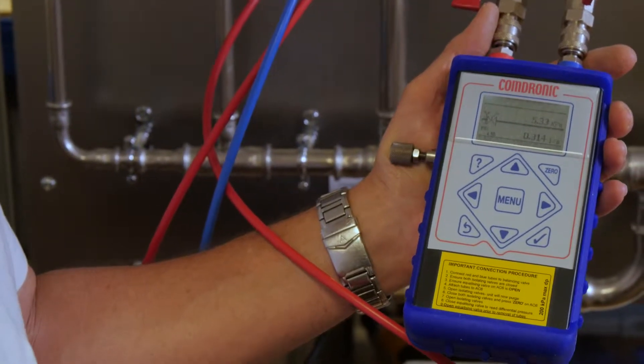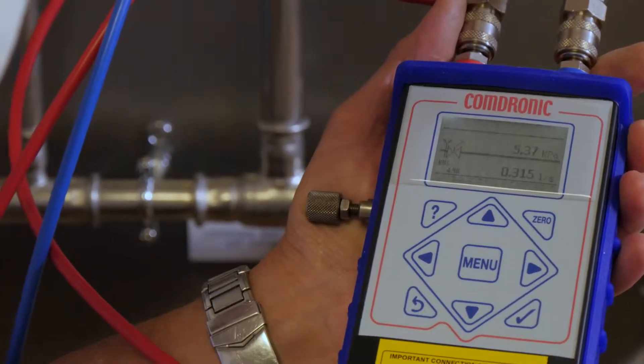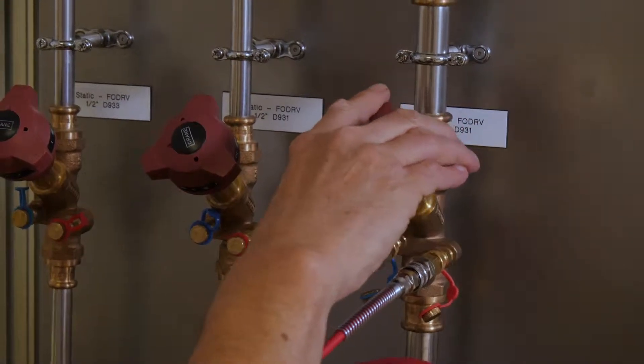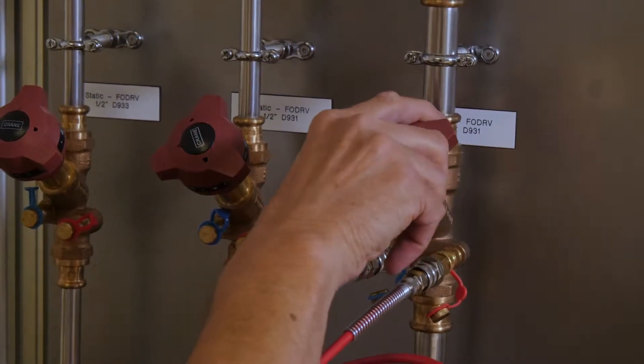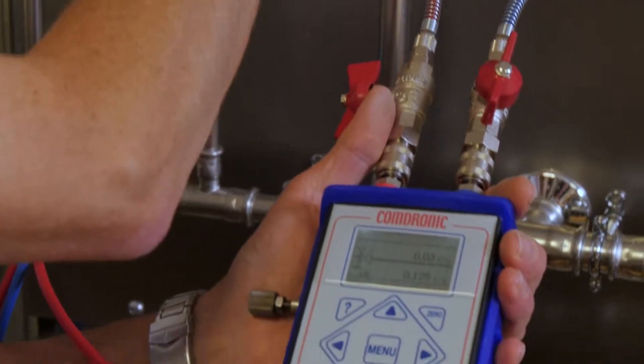If we're aiming for a lower flow rate than that we obviously need to adjust the valve. So we close the valve slowly watching the readings at all times until we reach the flow rate that's required.